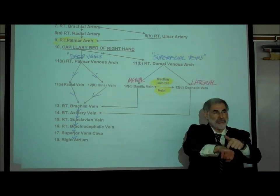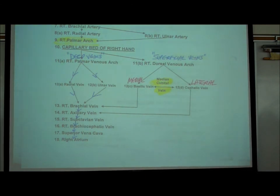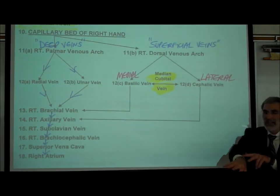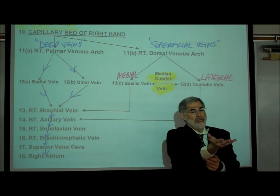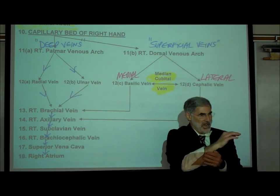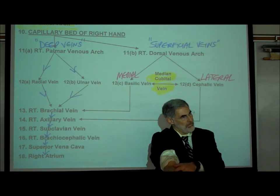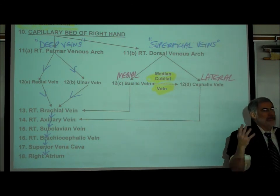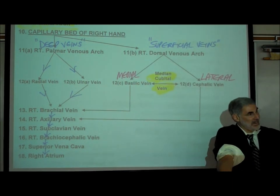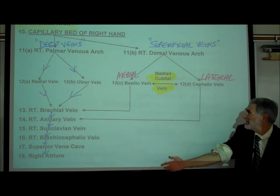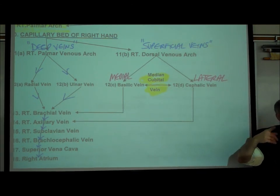Two major veins come off the dorsal venous arch: a basilic vein and a cephalic vein. They start on the dorsal or posterior side of your hand but swing over to the anterior side. Looking at your forearm, you can see many superficial veins there — but the two major ones are the basilic vein running along the medial side, and the cephalic vein running along the lateral side, in the anatomic position.